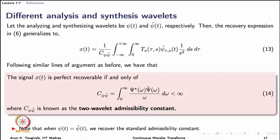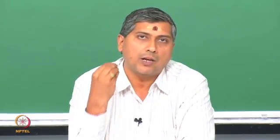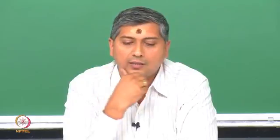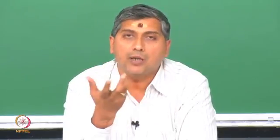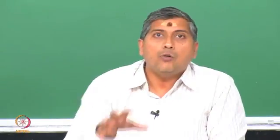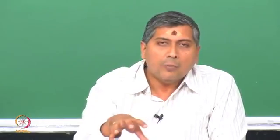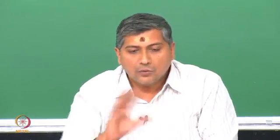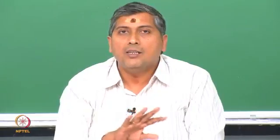Now the second question: can we use two different wavelets, one for analysis and one for synthesis? This turns out to be key to coming up with an implementable inverse CWT algorithm. The reason this idea arises is that the CWT is a redundant representation — we have computed far more coefficients than required. So we could pick any subset, perform operations on it, and still recover the signal using a different synthesis function.